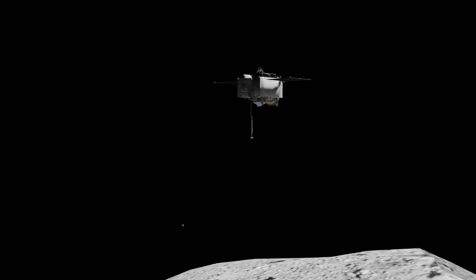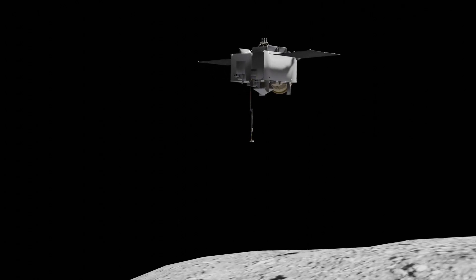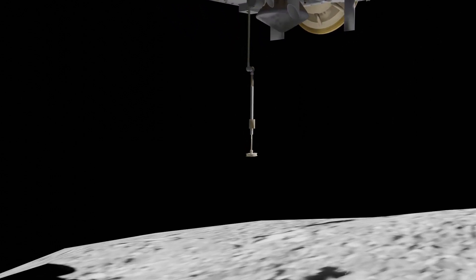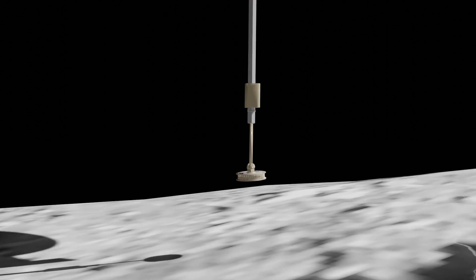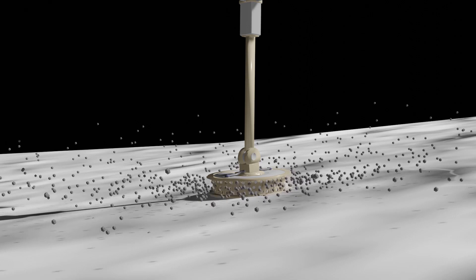Since OSIRIS-REx is a sample return mission, it's important to land in an area that has the type of materials you're trying to collect. It's also important that the material comes in pieces small enough that it can be collected by the machine onboard the spacecraft.